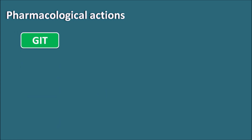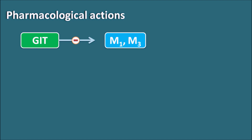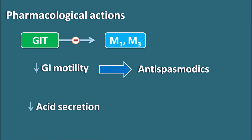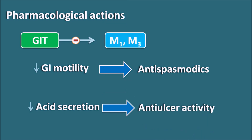Next — the GIT. The GIT is equipped with M1, M3, and M2 receptors, so mixed effects can be observed. One important effect of anticholinergics is to decrease GI motility — normally acetylcholine increases GI motility, so anticholinergics decrease it. Since they decrease motility they can be used as antispasmodics, producing relaxation of GI smooth muscle. Gastric parietal cells have M1 receptors responsible for gastric acid secretion, so anticholinergics can also decrease acid secretion.